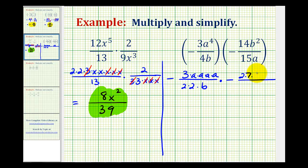b squared, we have two factors of b. Prime factorization of 15 would be three times five, followed by one factor of a.